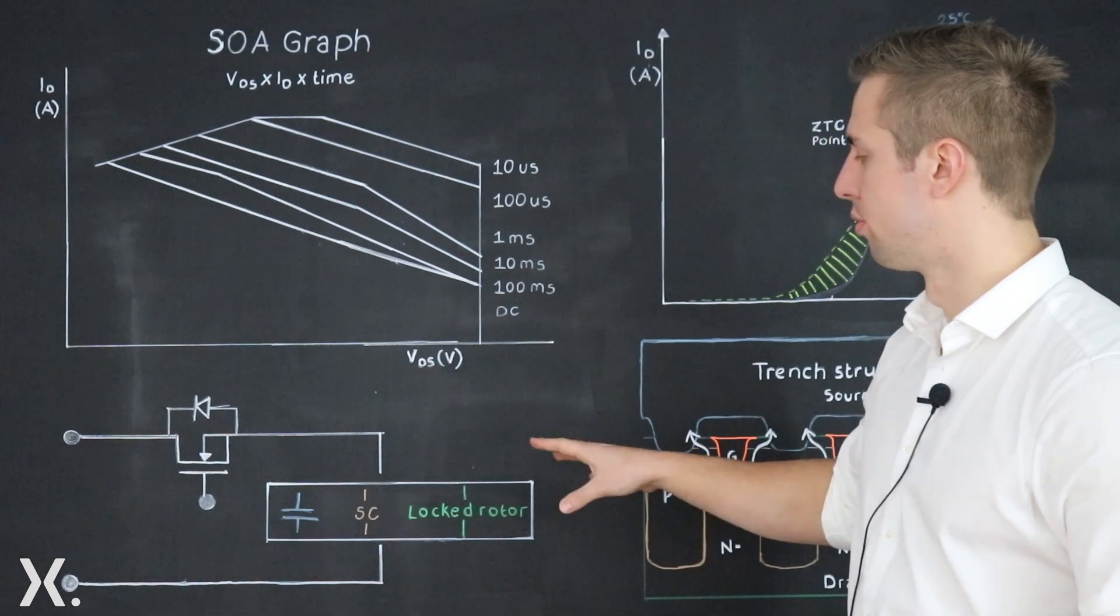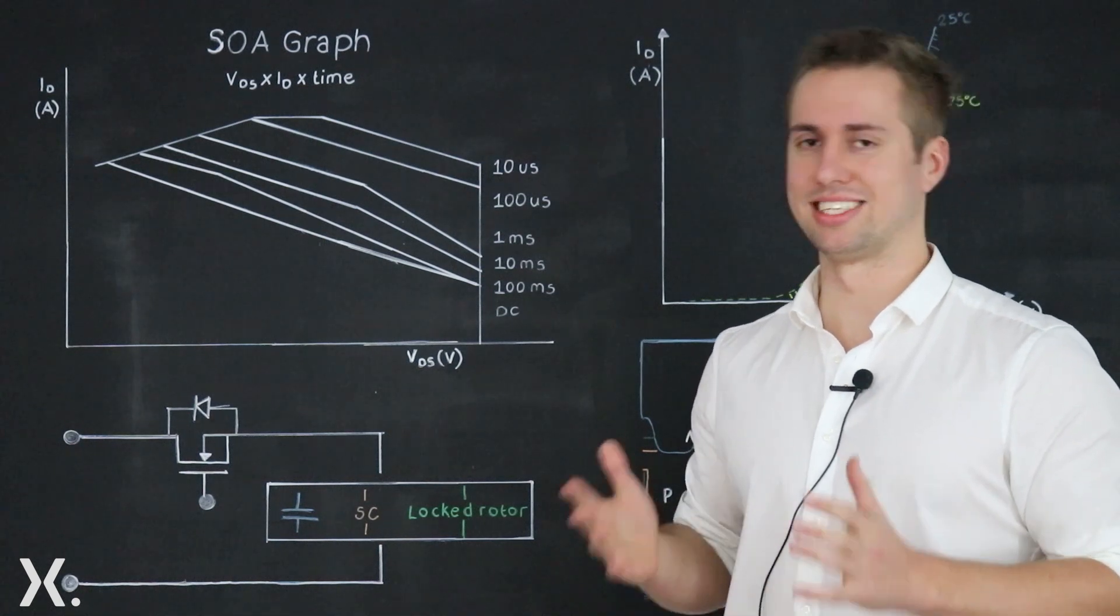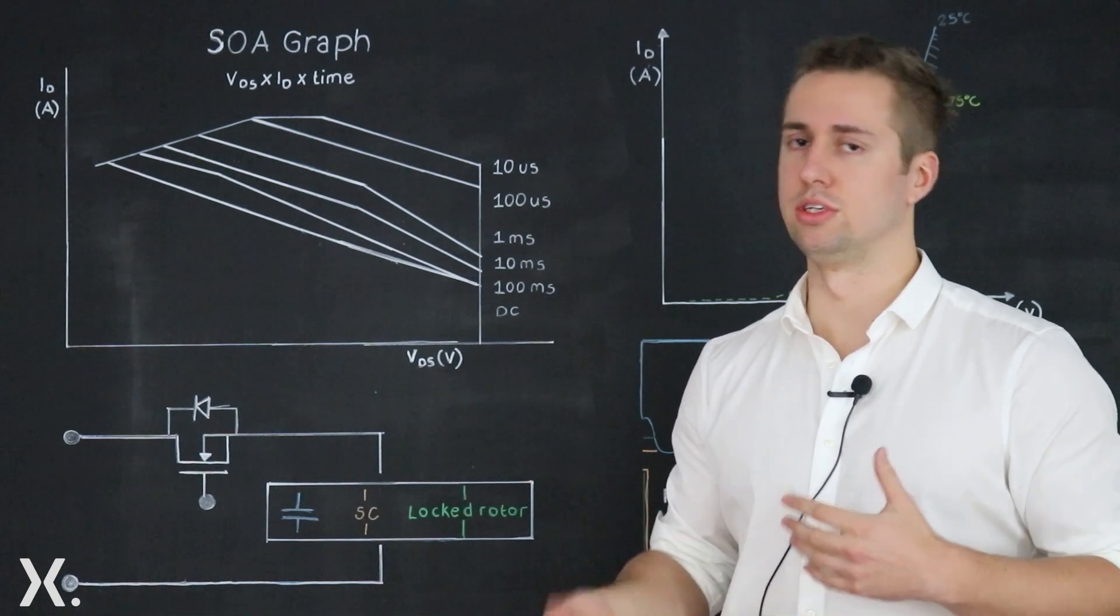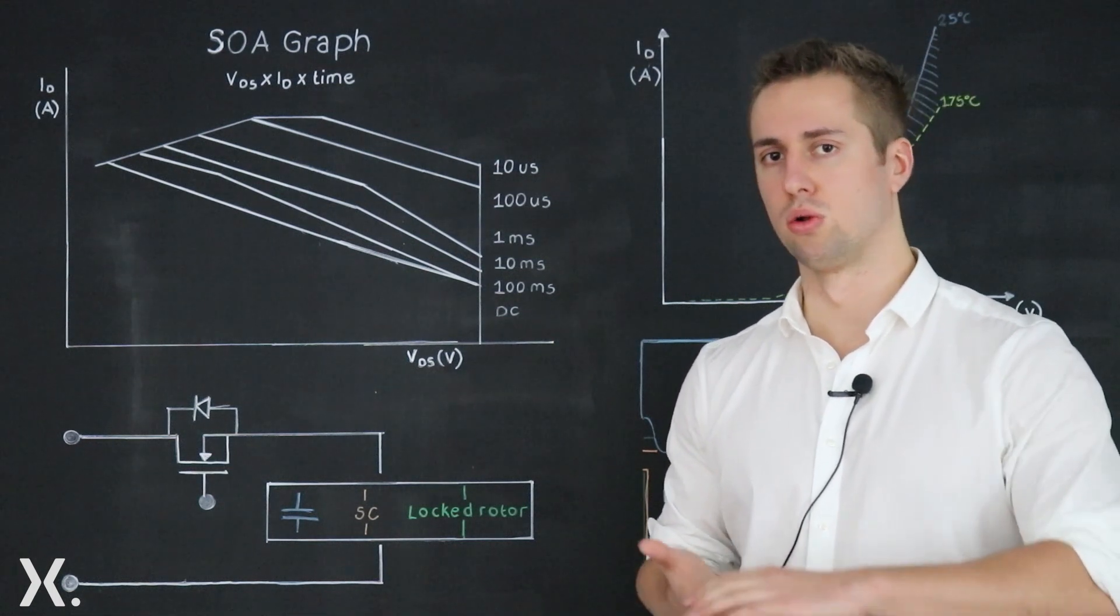Now why is all this important? Well if a device fails because of the SOA rating being exceeded, the device will fail as a three terminal short. What this means is that the gate source and drain all short together.